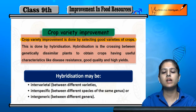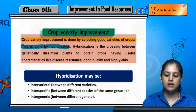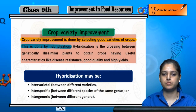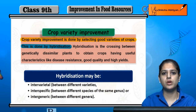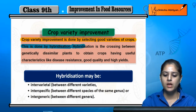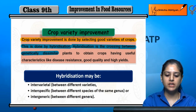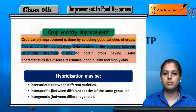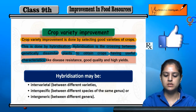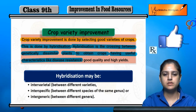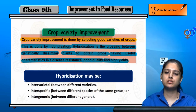Hybridization is the crossing between genetically dissimilar plants to obtain a crop having useful characteristics like disease resistance, good quality, and high yield.